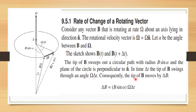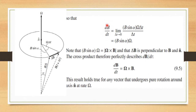The tip of b moves by an amount delta b, so delta b equals approximately b sine alpha times omega delta t. Therefore the rate of change db/dt equals the limit as delta t tends to zero of b sine alpha times omega delta t divided by delta t, which gives db/dt equals b sine alpha times omega.